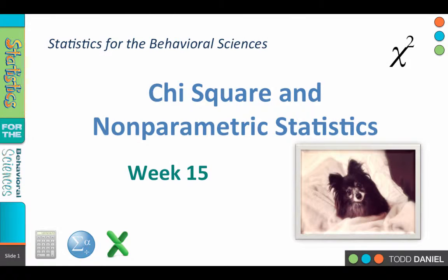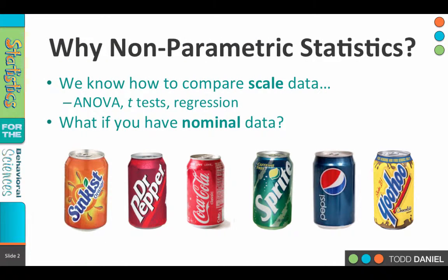For most of the class, we have been focusing on parametric statistics using scale-level data. But what do we do when our data are ordinal or maybe nominal? We do have options, and they're called non-parametric statistics. So for week 15, we're going to focus on non-parametric statistics and specifically the chi-square statistic.